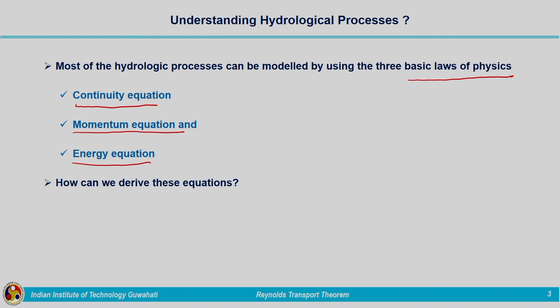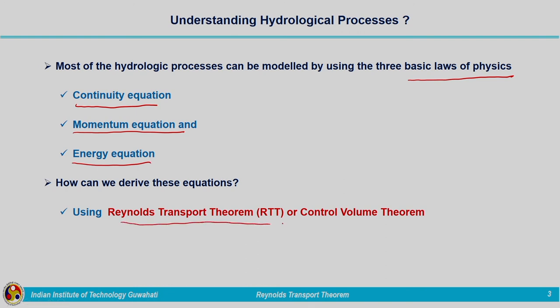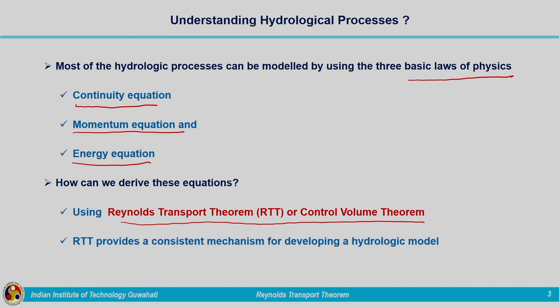The next question is: how can we derive these equations? These are basic equations based on fundamental laws of physics, but how can we derive them with respect to hydrologic processes? This can be derived by using the Reynolds Transport Theorem, or control volume theorem. RTT provides a consistent mechanism for developing hydrologic models. Once you are clear with Reynolds Transport Theorem, you will be able to derive the fundamental conservation laws of mass, momentum and energy.